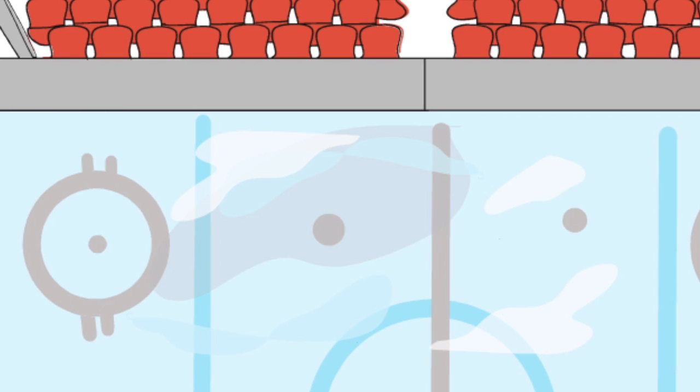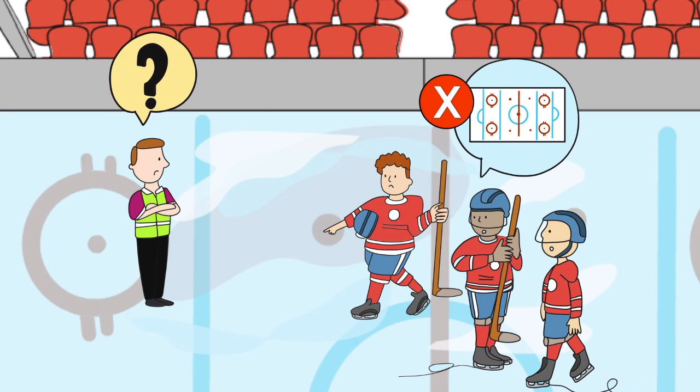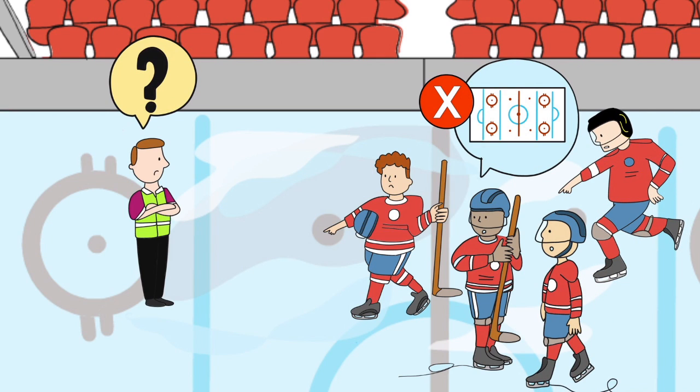Charlie is at a loss. He knows user groups complain, saying the ice feels gritty and slow, and often they can't see the lines clearly.